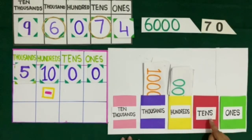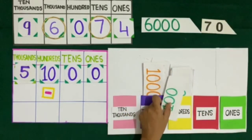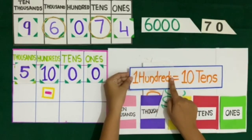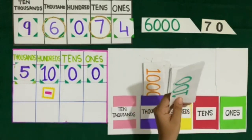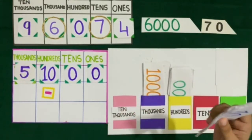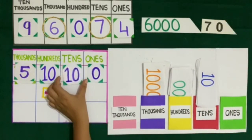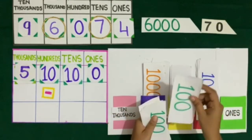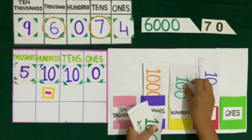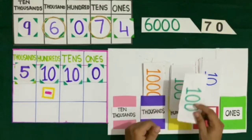Now to have a 10 rupees note, we will change a 100 rupees note. We know that 100 is equal to 10 tens, so we will change 1 note of rupees 100 with 10 notes of rupees 10. Now here we have 10 at the 10's place. And we count: 100, 200, 300, 400, 500, 600, 700, 800, 900.